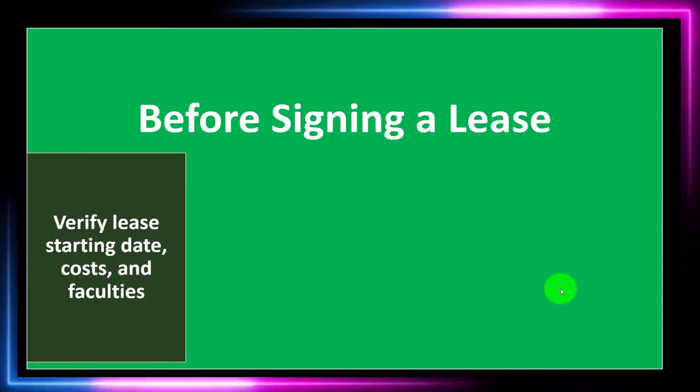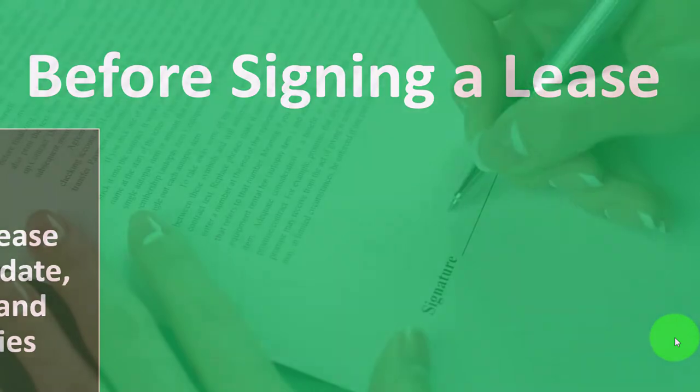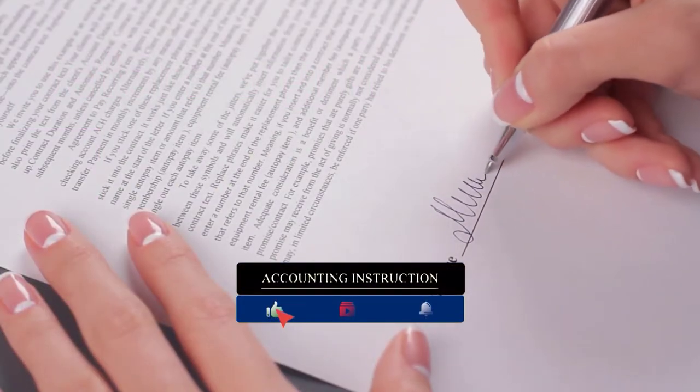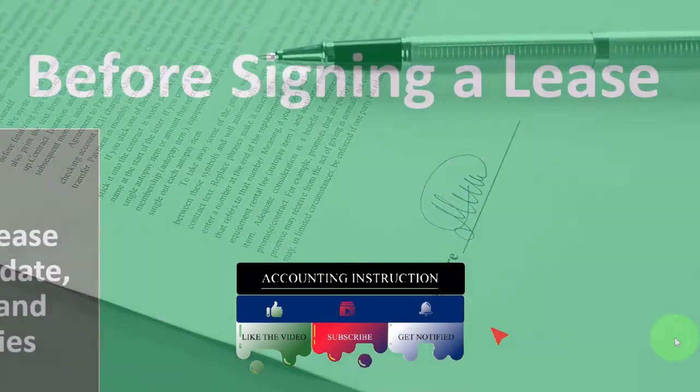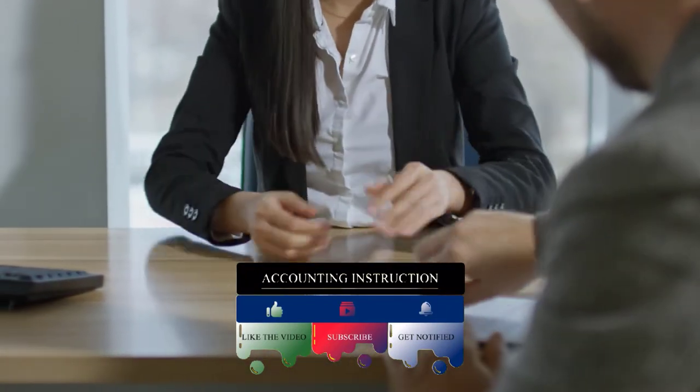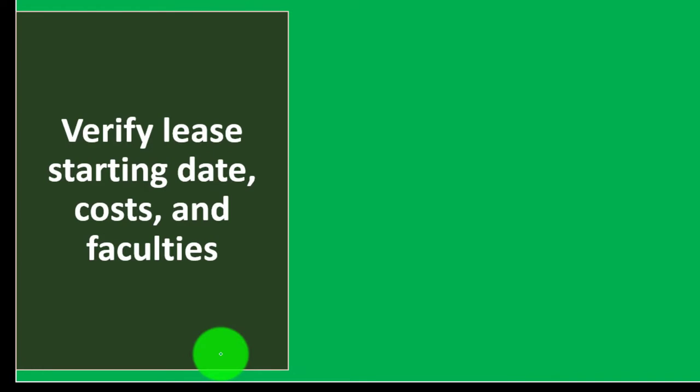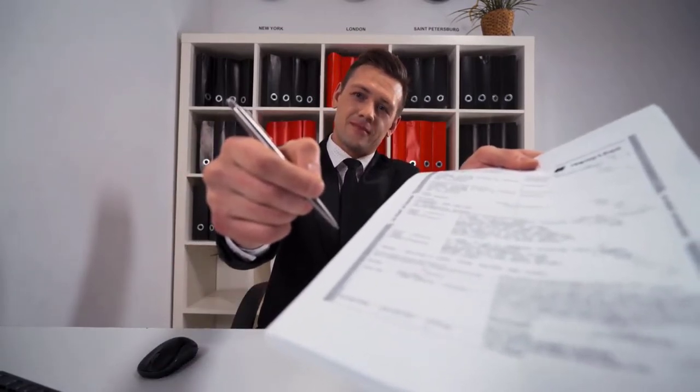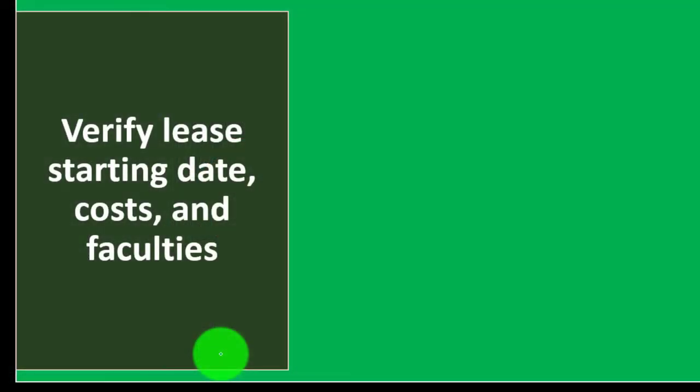Talk to current and past residents — if you know anyone who has lived there or worked with the management company, that information is useful. If not, you can talk to people currently in the location. Before signing a lease — which, while not a 30-year mortgage, is still a significant commitment — verify the lease starting date, costs, and facilities. Double-check that the cost on the lease matches what you agreed on.